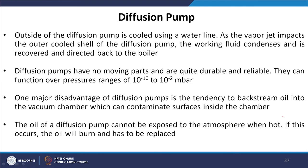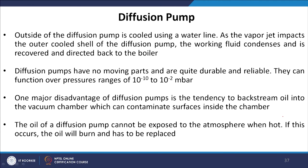Outside the diffusion pump is cooled using a water line. As the vapor jet impacts the outer cooled wall, the working fluid condenses and is directed back to the boiler. Diffusion pumps have no moving parts and are durable, functioning over a pressure range of 10⁻¹⁰ to 10⁻² millibar. Once the rotary pump brings pressure from atmospheric to 10⁻² millibar, the diffusion pump brings it down to 10⁻¹⁰ millibar — sufficient for metal electrode deposition at 10⁻⁷ millibar. A major disadvantage is oil back-streaming, which can contaminate the vacuum chamber. The oil must not be exposed to atmosphere when hot, or it burns and must be replaced.